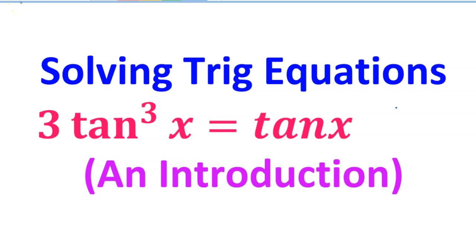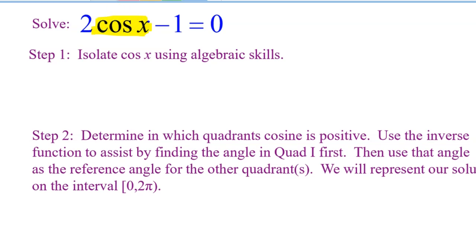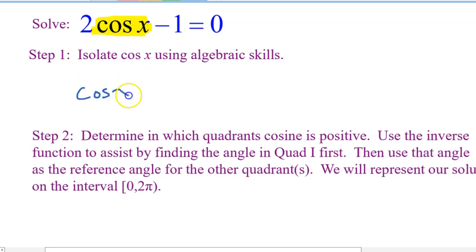Today, I'm going to teach you guys how to solve basic trig equations — this will be kind of an introduction. Solving a trig equation is pretty much a two-step process. The first step is to get the trig part of the equation, like in this case cosine x, by itself using your normal algebra skills. I'm going to add one to both sides and then divide by two, which gives me cosine x is equal to one-half.